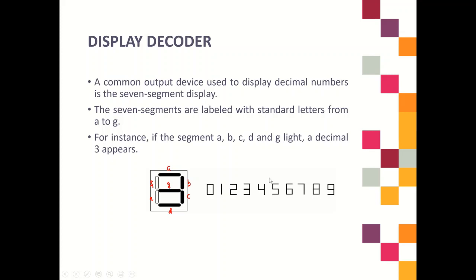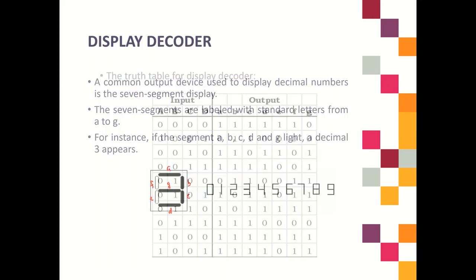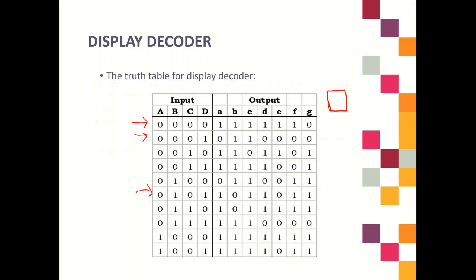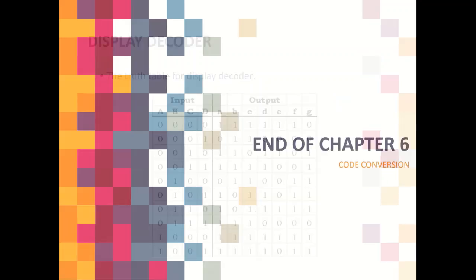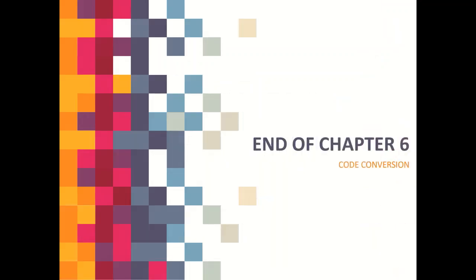This is our last part in chapter 6, which is the display decoder. We have now reached the end of chapter 6, which is code conversion.